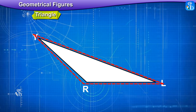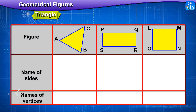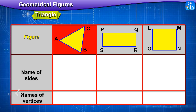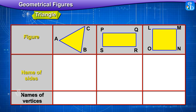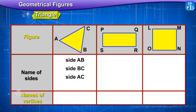Students, now look at the figures and complete the table below. What is this figure? Triangle ABC. Name the sides: side AB, side BC, side AC. Name the vertices: A, B, C.